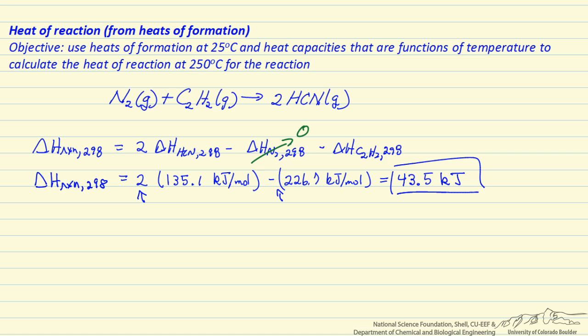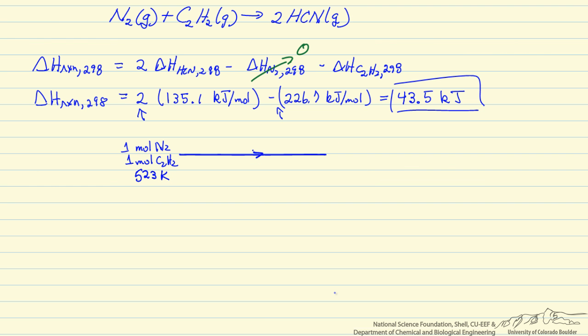Next we are going to take advantage of the idea of state function to calculate the heat of reaction at 250 degrees C. So I am going to represent this in a diagram. The idea is we are starting out with a mole of nitrogen and a mole of acetylene at 523 Kelvin. We are going to form 2 moles of HCN at 523 Kelvin. And we want to know what is the heat of reaction at 523 Kelvin.